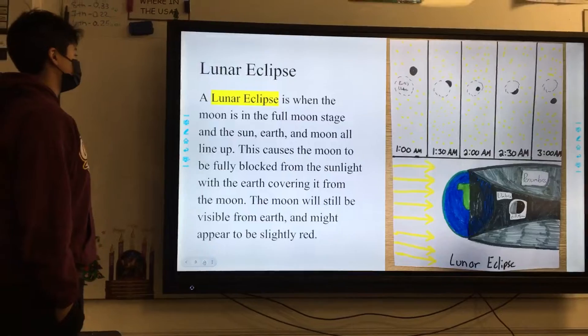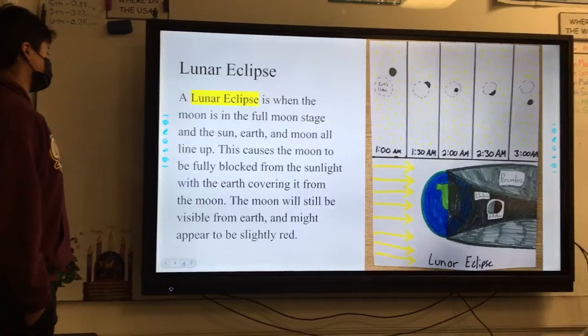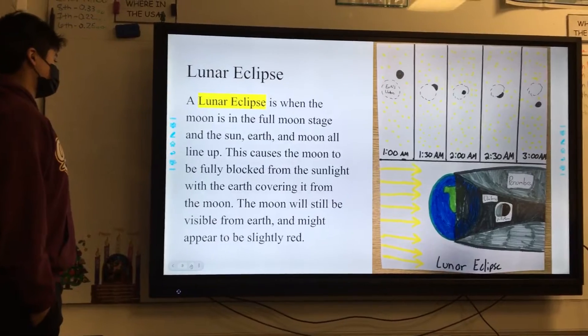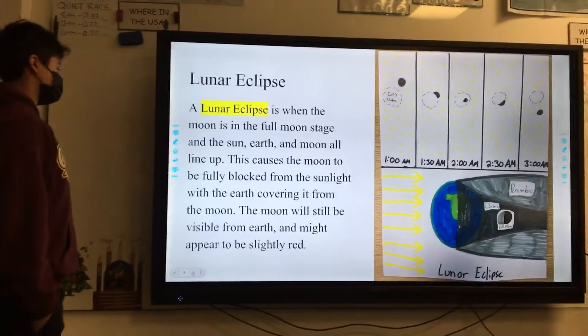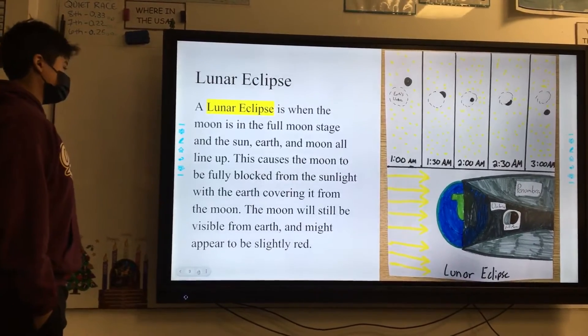Lunar eclipse. A lunar eclipse is when the Moon is in the full moon stage and the Sun, Earth, and Moon all line up. This causes the Moon to be fully blocked from the sunlight with the Earth covering it from the Moon. The Moon will still be visible from Earth and might appear to be slightly red.